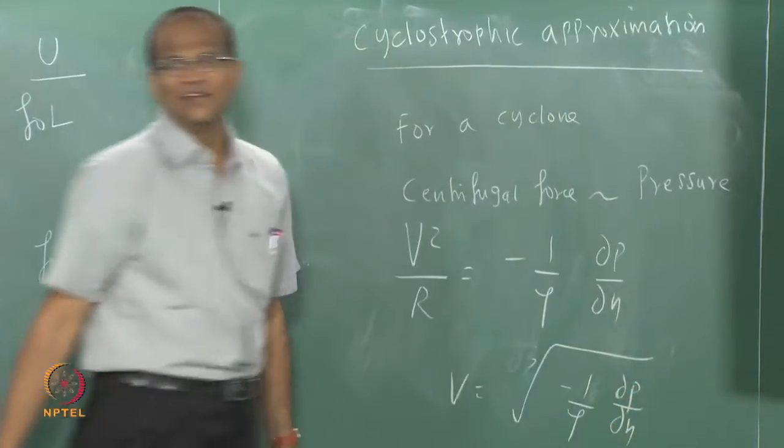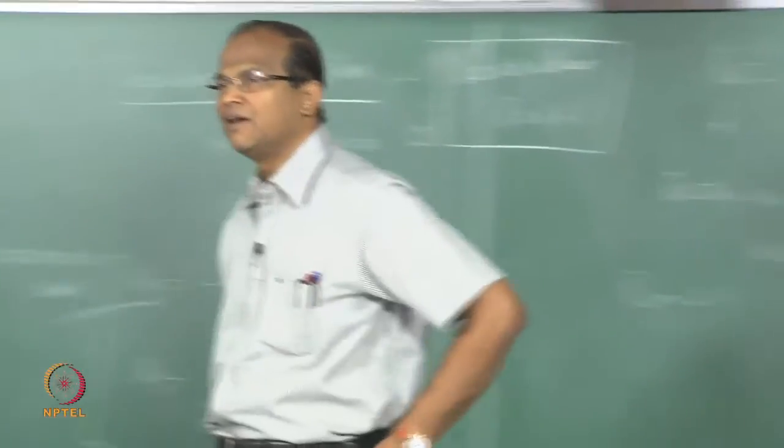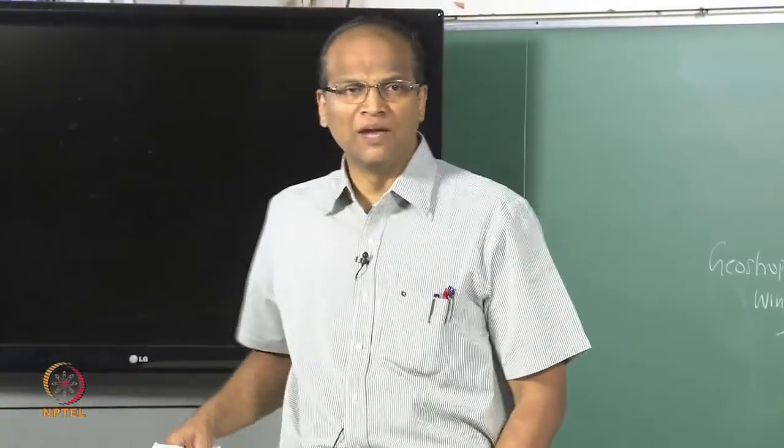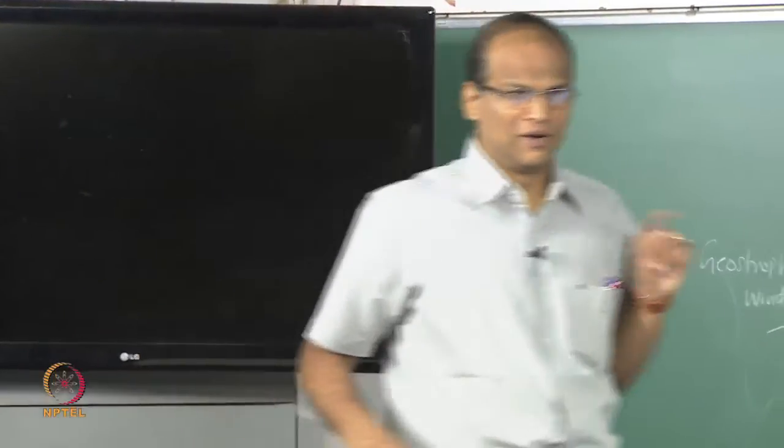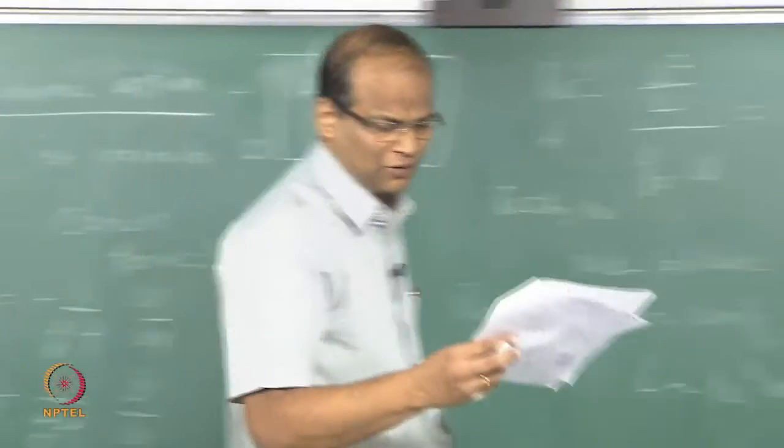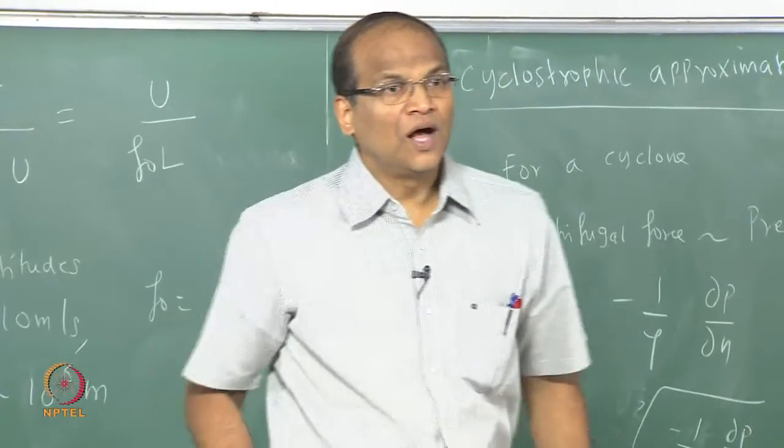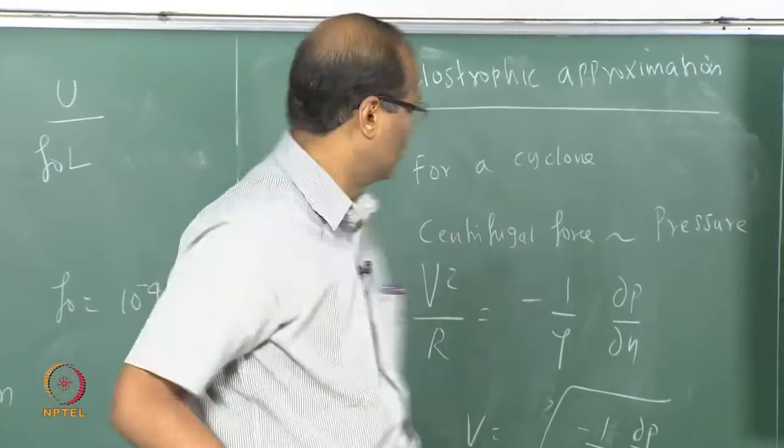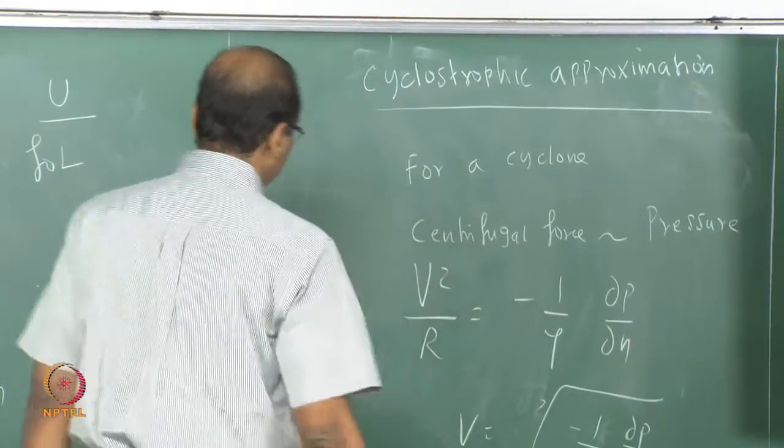So the normal pressure gradient dP by dN multiplied by 1 by rho, the minus is to take care of that dP by dN is negative. So it will give you the velocity, R is opposite of dP by dN, sorry, V.